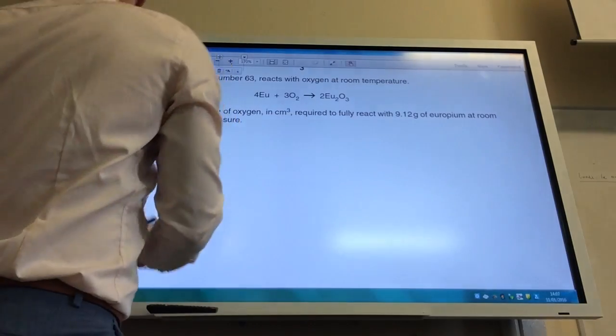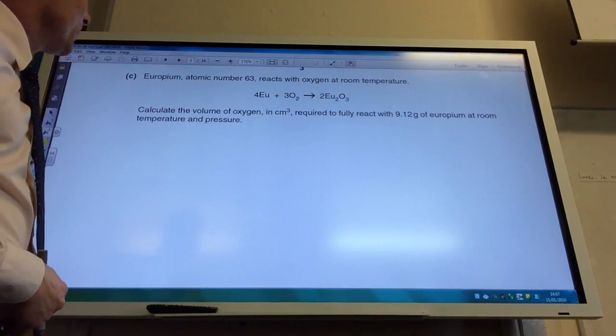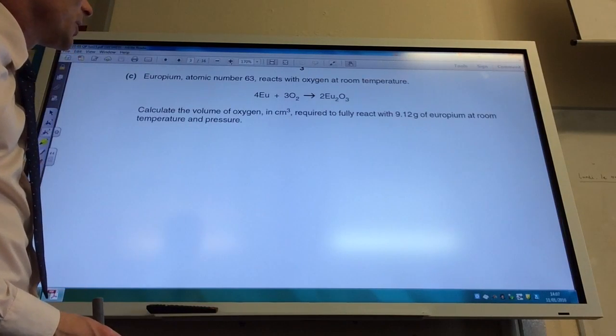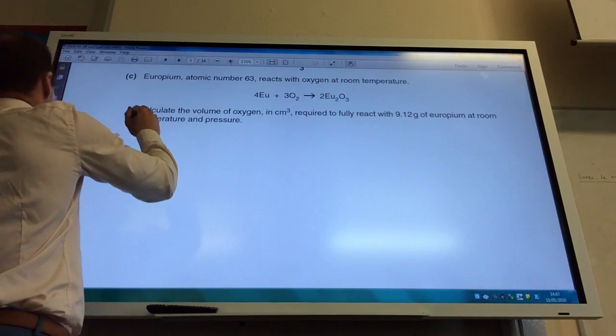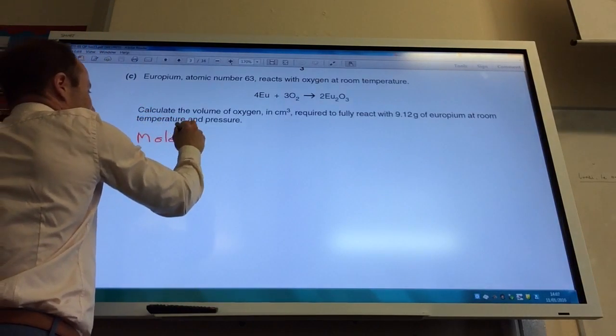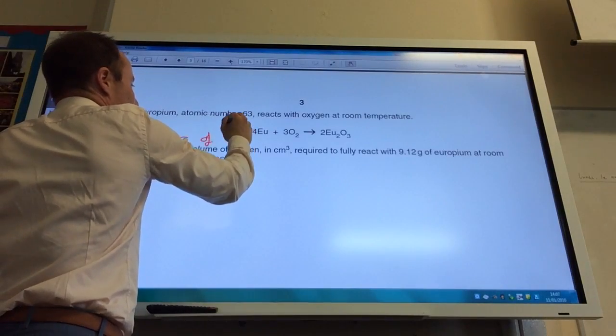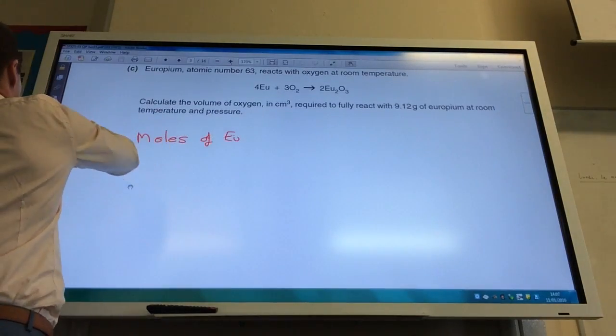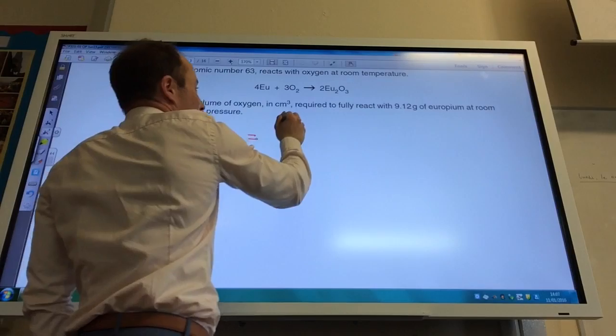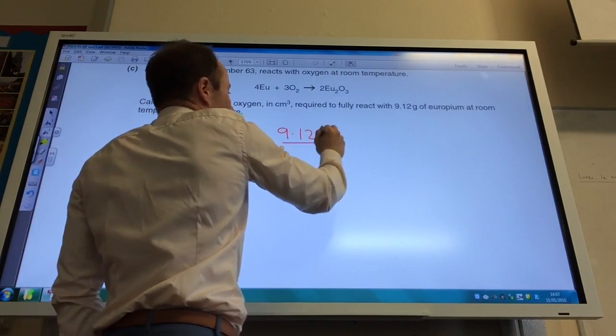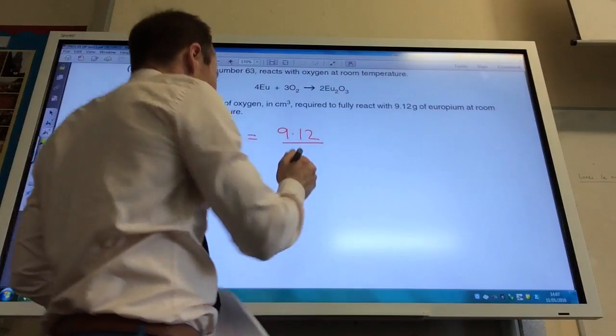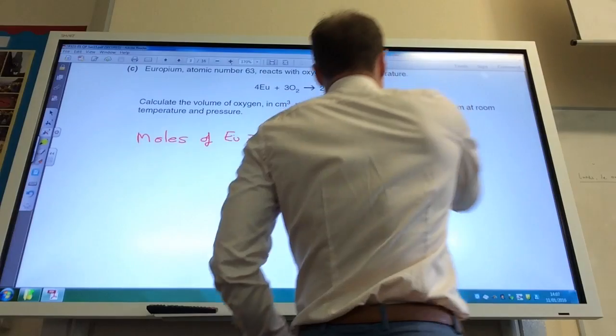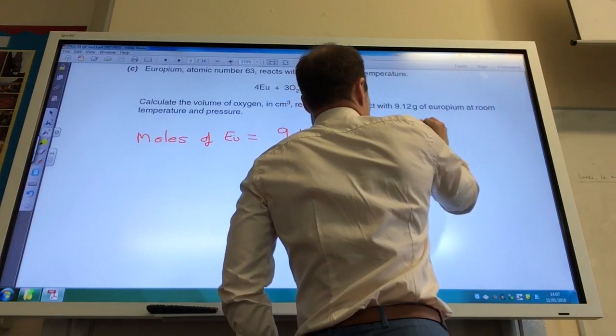Time to do some calculations now. Europium, atomic number 63, reacts with oxygen at room temperature. I need to calculate the volume of oxygen required to react with 9.12 grams of europium. The first thing you're going to do is calculate moles of europium. You've been given a mass. That is going to equal my mass, 9.12 grams, over the relative atomic mass of europium, which is 152.0. That comes to 0.06 mole.